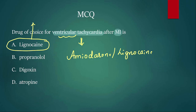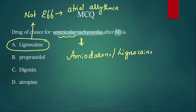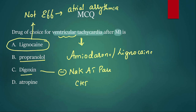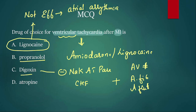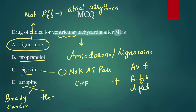Lignocaine is not effective in atrial arrhythmias — it will not work in atrial arrhythmias. Propranolol is a beta blocker. Digoxin inhibits sodium-potassium ATPase and is used to manage congestive heart failure. Digoxin also has AV blocking property — vagomimetic — so it is used in atrial fibrillation or atrial flutter. If a patient has CHF and atrial arrhythmia, we can give digoxin. Atropine is used for bradycardia and heart block.